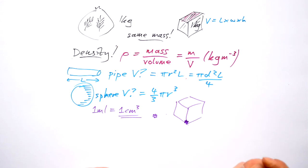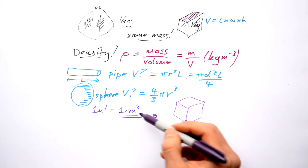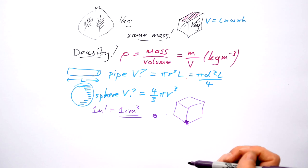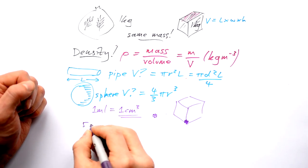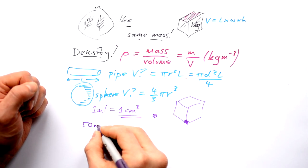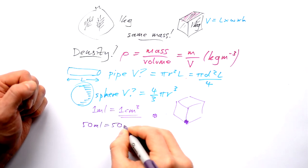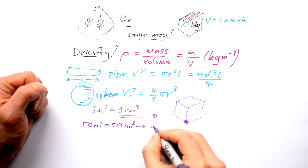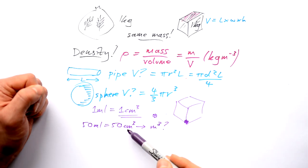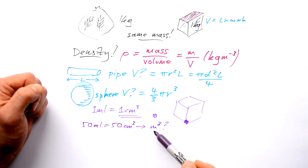There's my meter cubed. There's my centimeter cubed. All you have to do is convert centimeters into meters three times. So let's say that I have 50 milliliters. That equals 50 centimeters cubed. How do I convert that into meters cubed? Well I know to convert centimeters into meters. Conversion factor is 100.